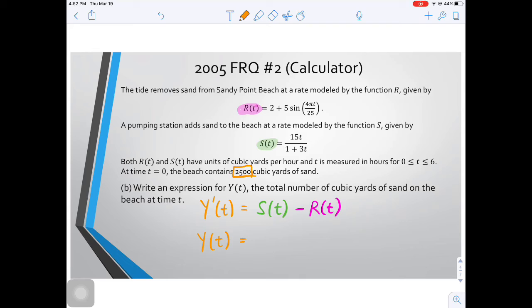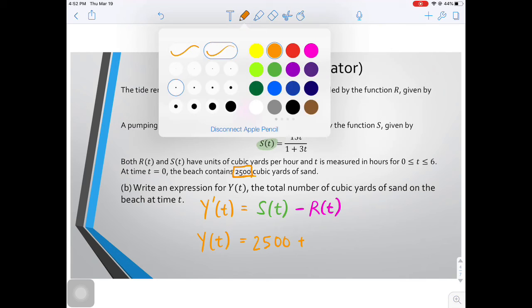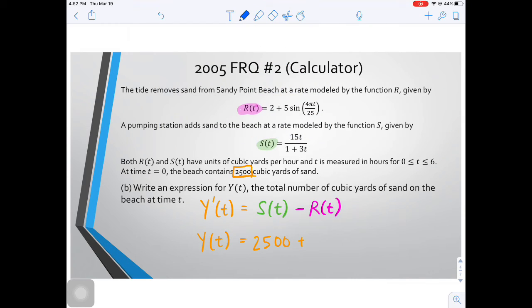So when we write an expression for Y(t), it's going to be the initial amount, 2500, plus the change in amount. And the change in amount is going to be the integral starting from zero, but we're not going to six, okay? Because Y(t) doesn't want how much sand there is on the beach after six hours. It wants it for any time. So we're going to integrate starting from zero, but to go to any time t. So it could be zero to six, but this is more general. This is from zero to whatever time we want to stop counting.